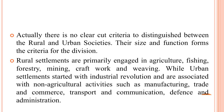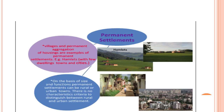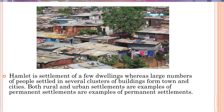Urban settlement started with the industrial revolution and is associated with non-agricultural activities such as manufacturing, trade and commerce, transport and communication, defence and administration. Settlements can be permanent or temporary. Villages and permanent aggregations of housing are examples of permanent settlement. A hamlet is a settlement of a few dwellings, whereas a large number of people settled in several clusters of buildings form towns and cities. On the basis of size and function, permanent settlements can be rural or urban. Both rural and urban settlements are examples of permanent settlement.